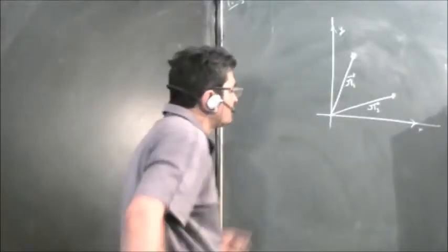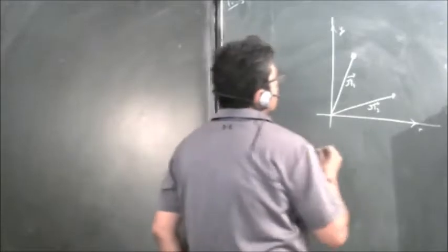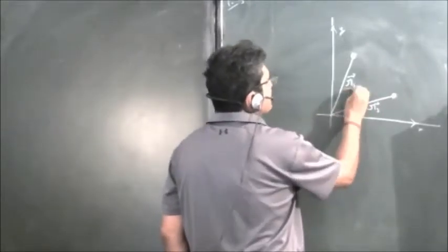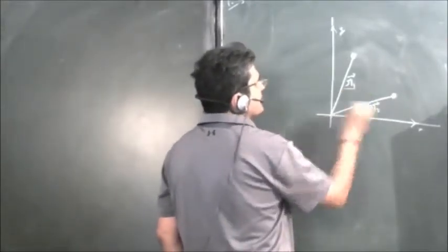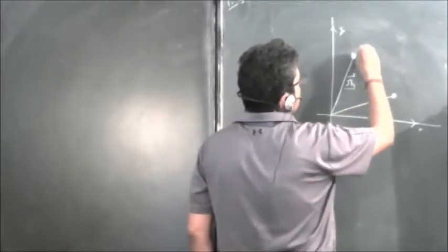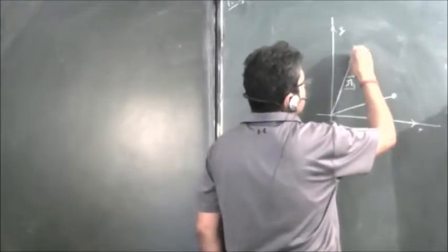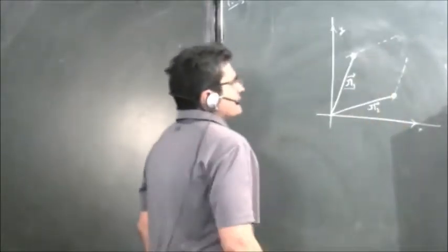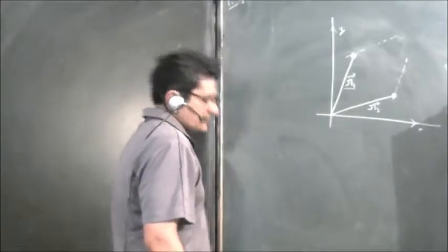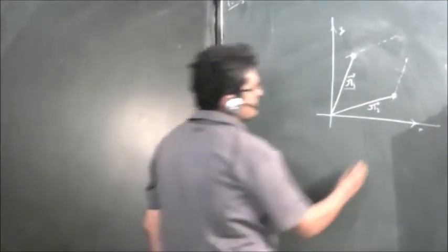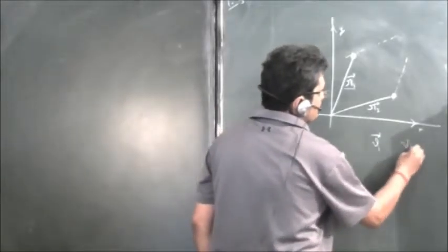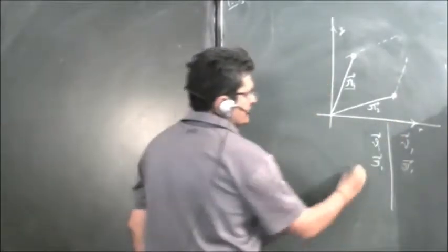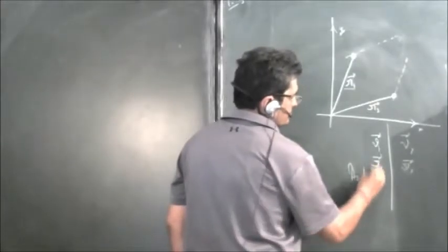We will solve Irodov problem 1.5. In this problem we are given two particles who are initially at the locations given by position vectors r1 and r2. They are having certain velocities in some direction. We need to find the relationship between velocity v1 vector, v2 vector, r1 vector, and r2 vector such that the particles collide.